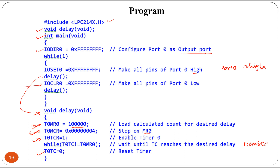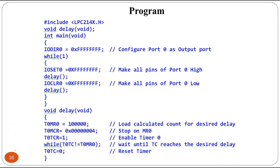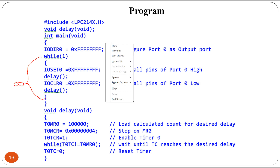After the delay, the program returns to the main loop. IO clear 0 is written with 0xFFFF to set all Port 0 pins low, and the delay function is called again. The match register and match control register are reloaded, the timer is restarted, and the program waits again for the count to complete. Since this is inside an infinite while loop, the LED blinking continues indefinitely.